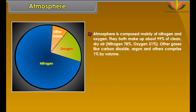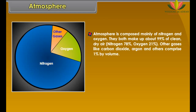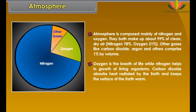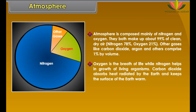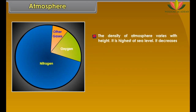Pressure varies from place to place. The difference in air pressure makes the air move. Moving air is known as wind. The atmosphere is composed mainly of nitrogen and oxygen, which both make up about 99% of clean, dry air — nitrogen 78% and oxygen 21%.